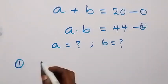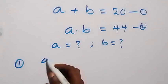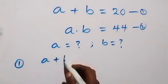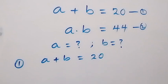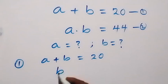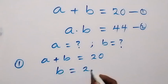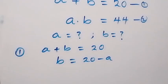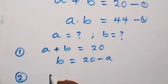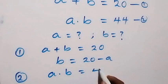From equation 1, we have A plus B equals to 20. Then from here, let's take A to the other side and we have B now equals to 20 minus A. Then from equation 2, A times B equals to 44.